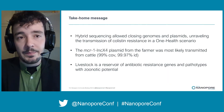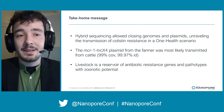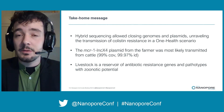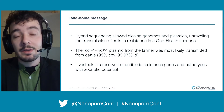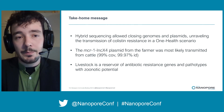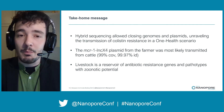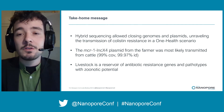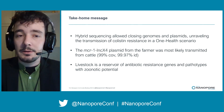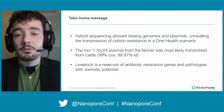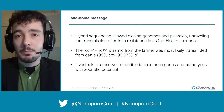The take-home messages are that hybrid sequencing allowed us to close genomes and plasmids, unraveling the transmission of colistin resistance in a one-health scenario. The MCR1 INC-X4 plasmid from the farmer was most likely transmitted from cattle. And finally, livestock is a reservoir of antibiotic resistance genes and pathotypes with zoonotic potential.